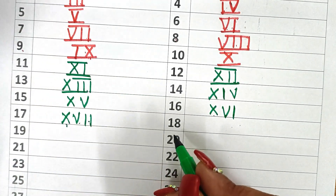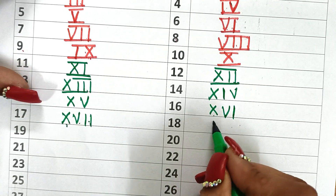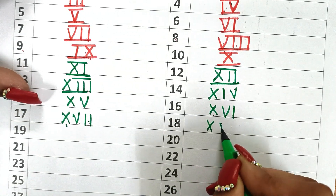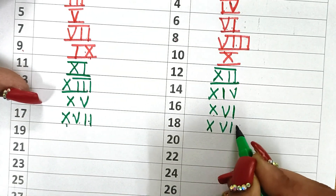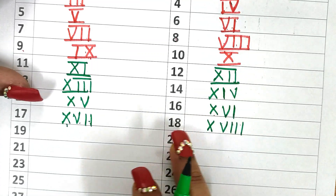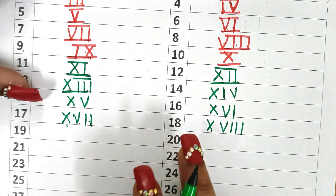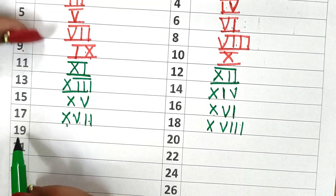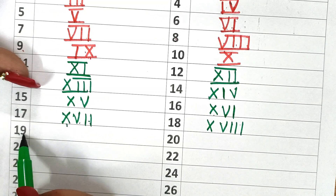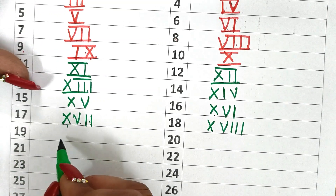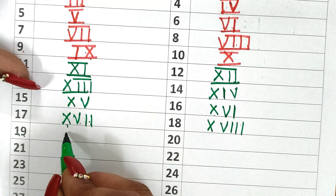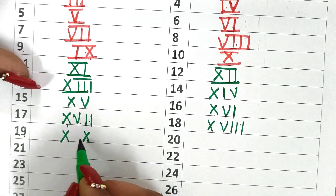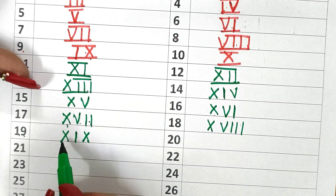Now write 18. How do you write 18? First write 10, then write 8: 5, 6, 7, 8. This is 18 — XVIII. Next one is 19. How do you write 19? 19 is like 10 then 9, so this is XIX.